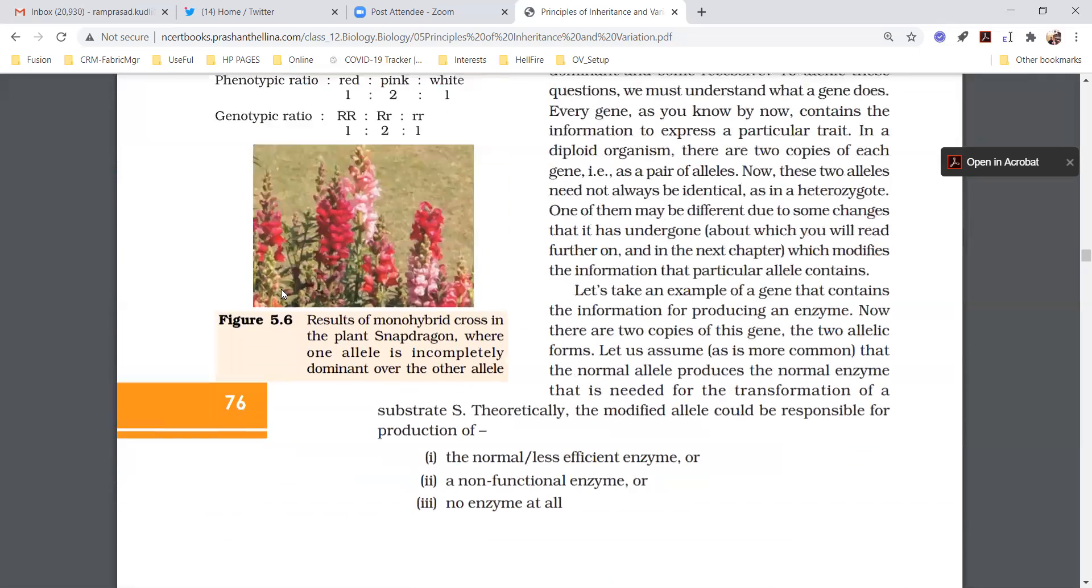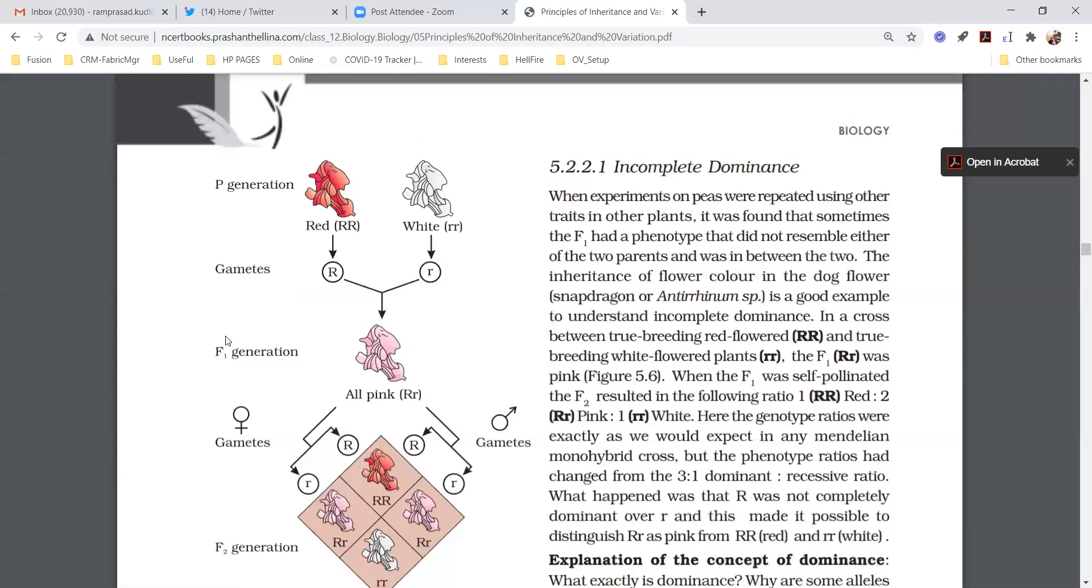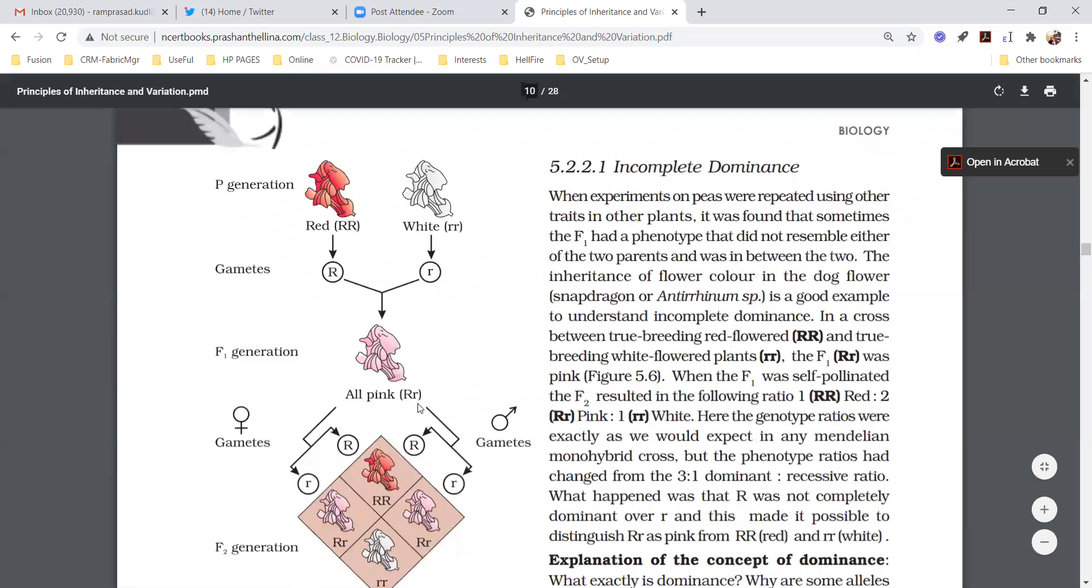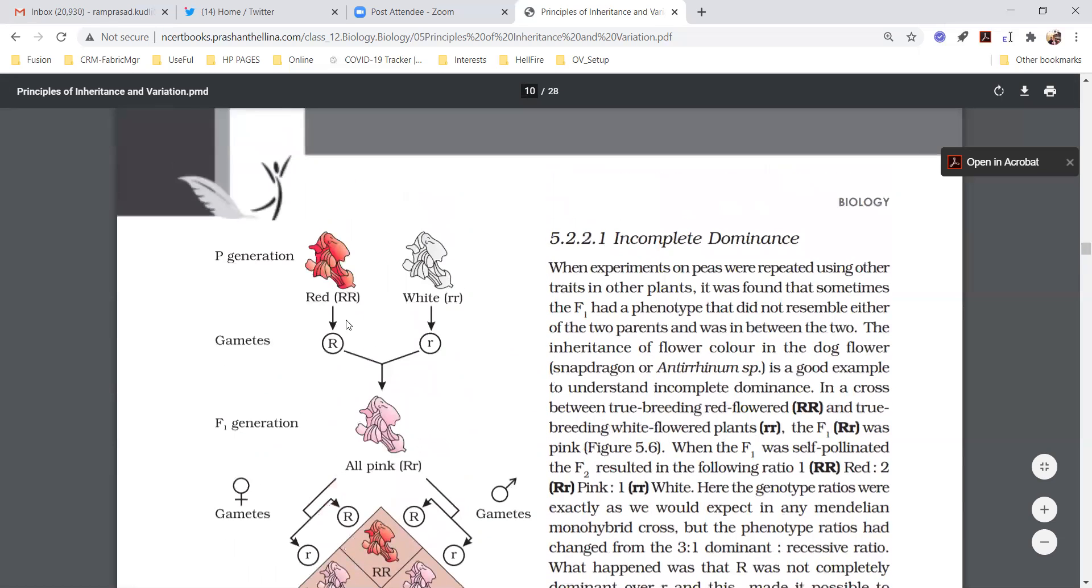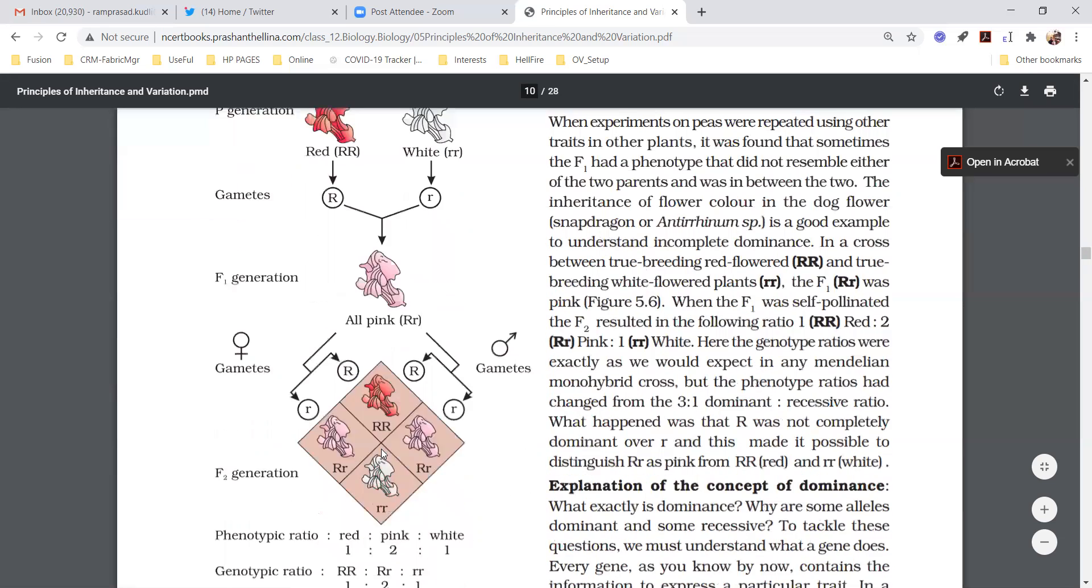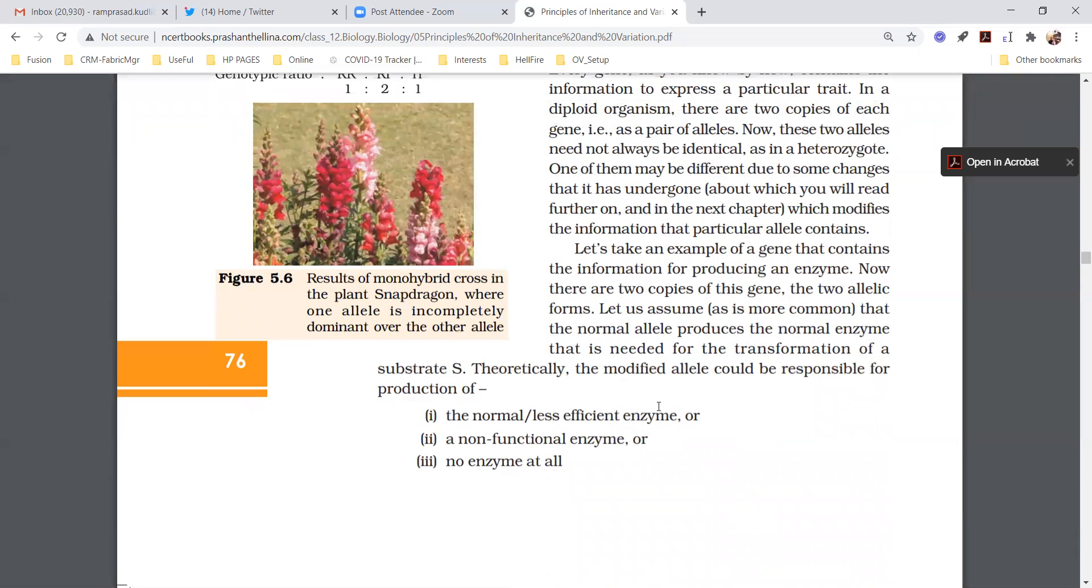What is this paragraph about? They are explaining incomplete dominance. This is very clear because we are explaining with the help of a color. When you look at red, white, pink, it's fine. But the same concept they are explaining with the help of an enzyme. Just assume one normal allele produces normal enzyme. One modified allele may produce normal enzyme or non-functional enzyme or no enzyme at all.